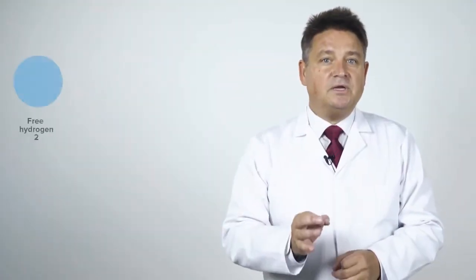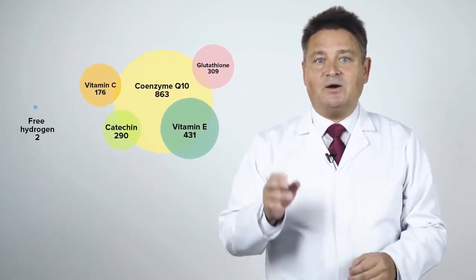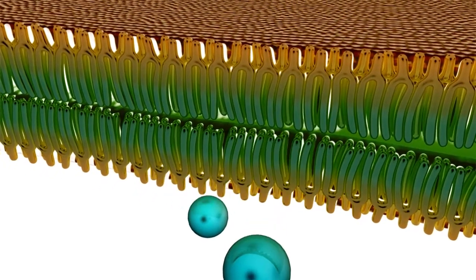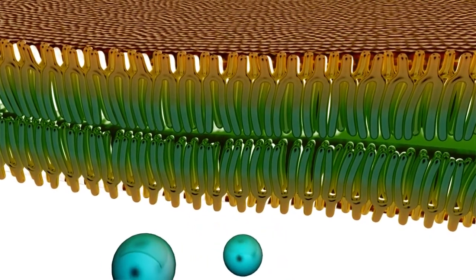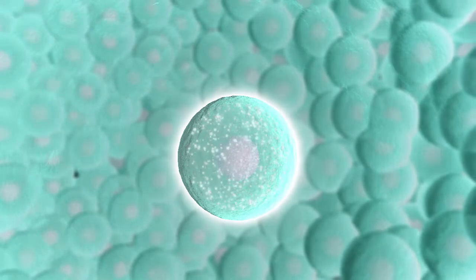Free hydrogen is the smallest but most powerful antioxidant in existence. Because it is smaller than other antioxidants, free hydrogen can easily cross the cell membranes and the blood brain barrier. Only hydrogen can neutralize harmful free radicals directly and quickly in a matter of seconds.